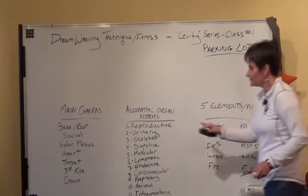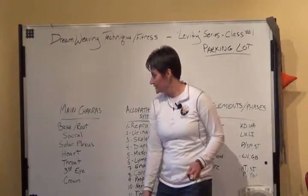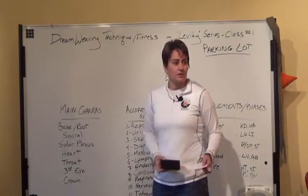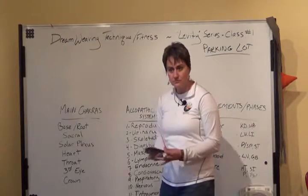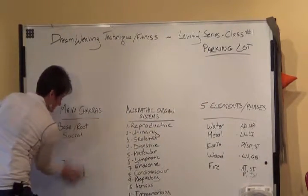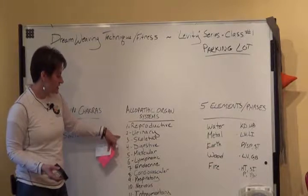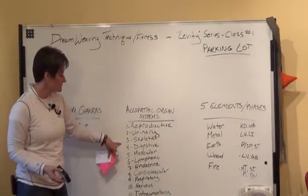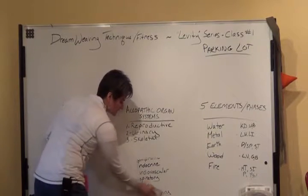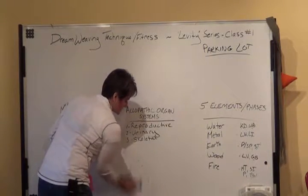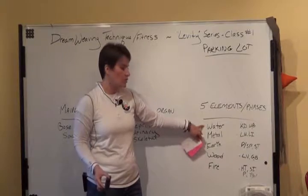Today we're going to look at the base or root chakra and the sacral chakra. We're going to leave out solar plexus, heart, throat, third eye, and crown for today. We're also going to look at the reproductive, urinary, and skeletal systems. Digestive was the next one on the list and you'll see why when we get to the next groups. We're also going to look at the water element and a little bit of metal.